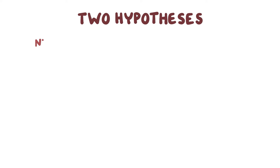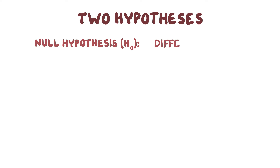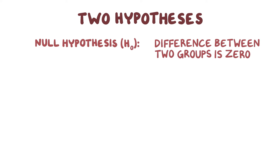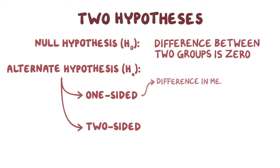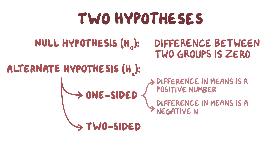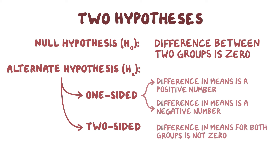Typically, a paired t-test starts with two hypotheses. The first is the null hypothesis, which states that the mean of the differences between the groups is equal to zero — in other words, that taking the medication results in no difference in systolic blood pressure. The second is the alternate hypothesis. Since a t-test can be either one-sided or two-sided, there are two versions: a one-sided alternate hypothesis states that the mean of the differences is either a positive or negative number, while a two-sided alternate hypothesis states that the mean of the differences is not equal to zero, without specifying the direction.